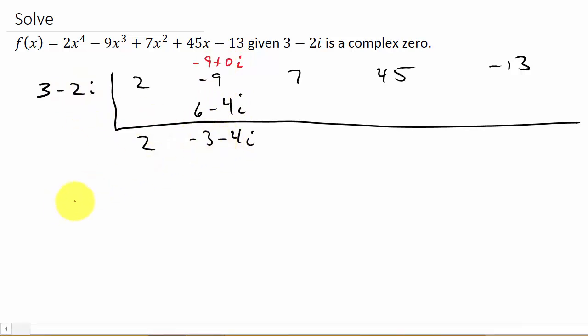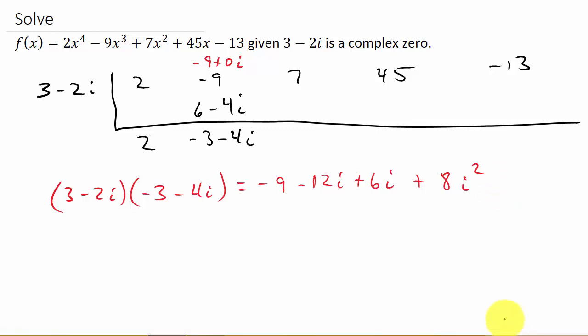Alright, now let's multiply these. Now what I would do is I would make sure that I multiplied these out by writing it out. Don't try to do it in your head. So we multiply the first, that's negative 9. Outside, that's negative 12i. Inside, that's plus 6i. And then the last, so that's plus 8i squared. But remember, i squared is the same thing as 8 times negative 1, which would make this just minus 8. And so this would give me negative 17 minus 6i.